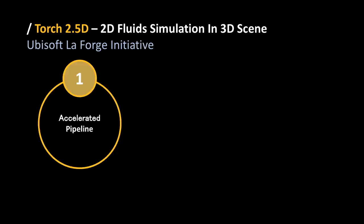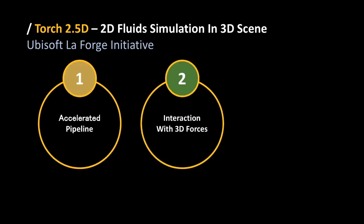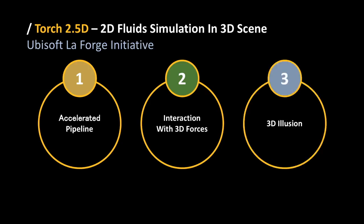At La Forge, we are working on Torch 2.5D, which is a 2D fluid simulation in a 3D scene. We have developed techniques to accelerate the pipeline, a system that allows for reinterpreting the 3D forces in the 2D simulation space, as well as a number of rendering techniques to create a 3D illusion.